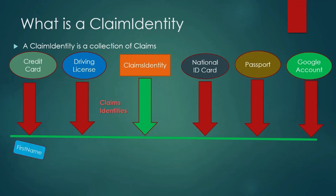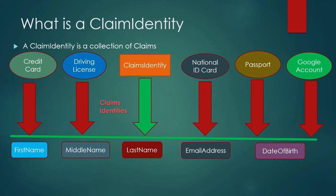All of these — credit card, driving license, national ID card, passport, and Google account — are claims identities. Each of them is a collection of claims such as first name, middle name, last name, email address, and date of birth. For example, the driving license can have first name, middle name, and last name; the passport can have first name, middle name, last name, and date of birth; the Google account can have first name, middle name, last name, and email address.